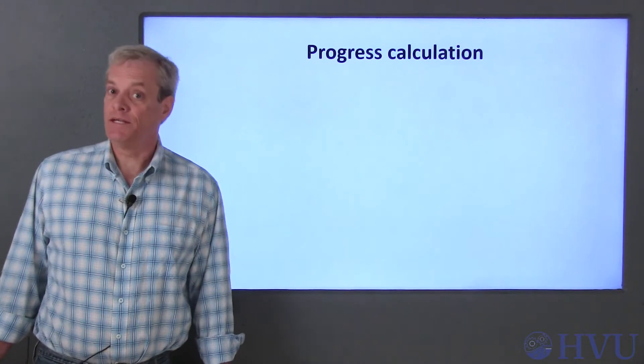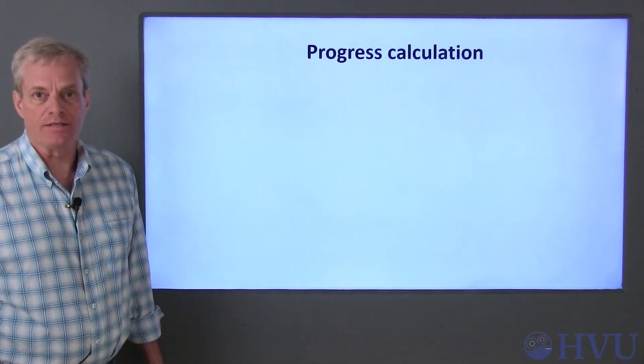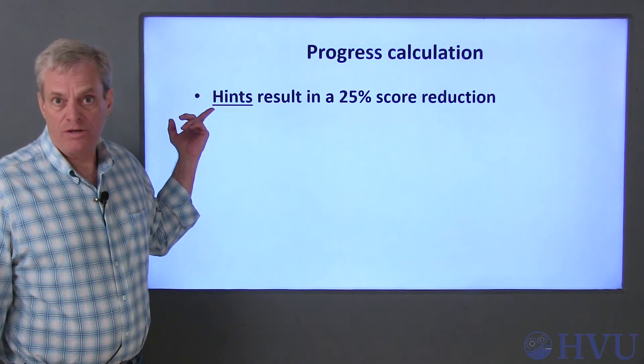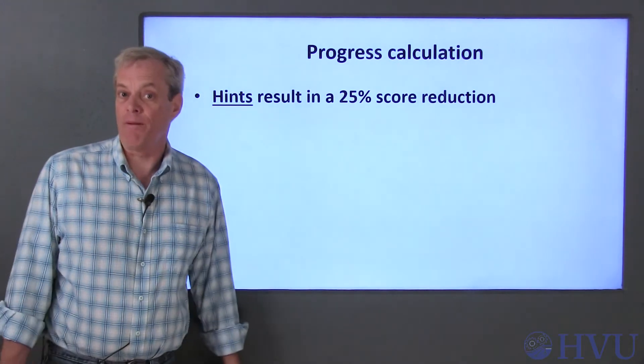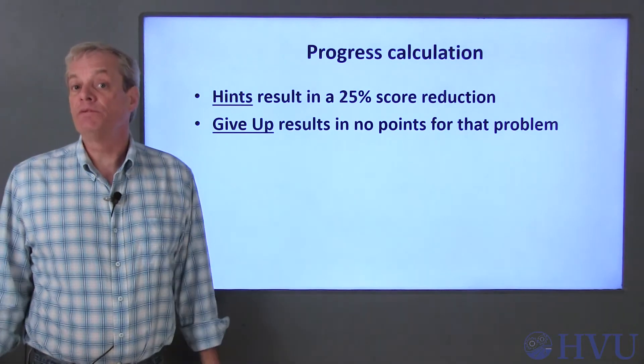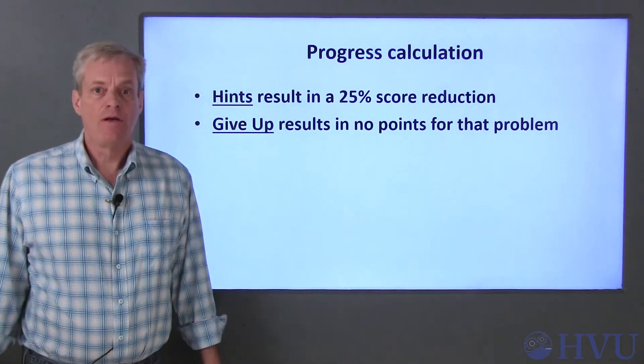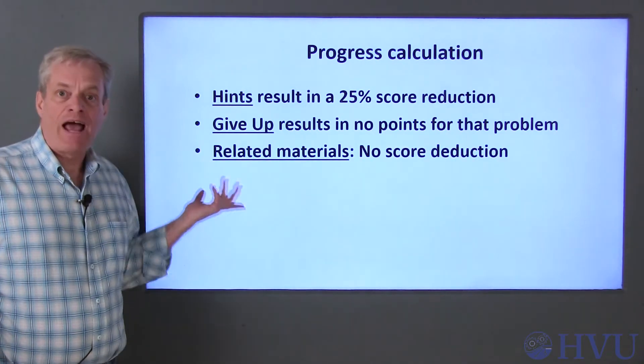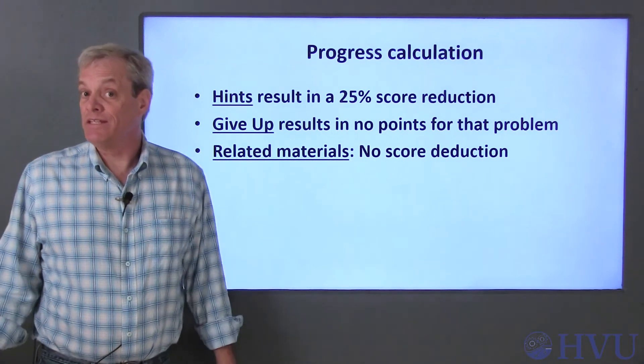Now let's talk about the penalties associated with getting assistance. Clicking on a hint button when it appears will deduct 25% from that problem. Clicking on give up results in no completed points for the problem. There is no penalty for accessing related materials in the assistance tab.